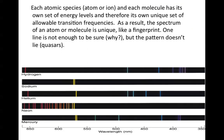Each atomic species, whether it's an atom or an ion, and each molecule has its own set of energy levels, and therefore its unique set of allowable transitions. As a result, the spectrum of an atom or a molecule is unique, like a fingerprint.